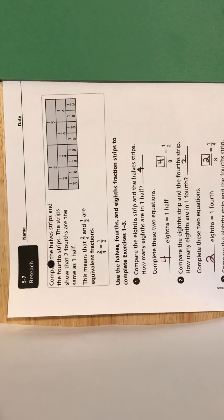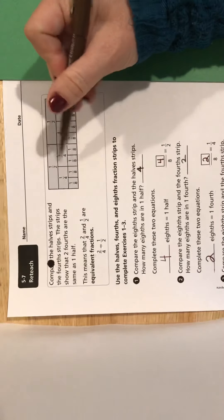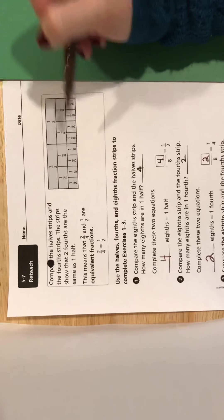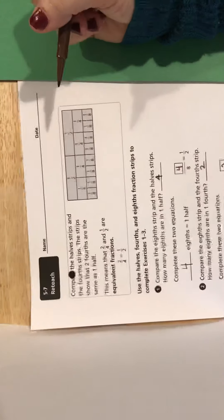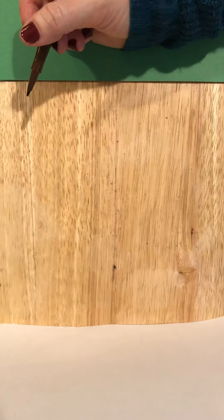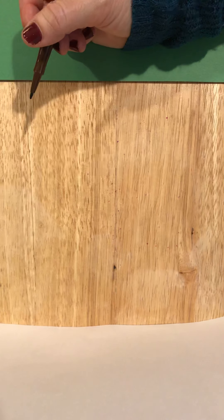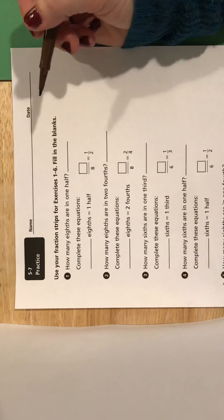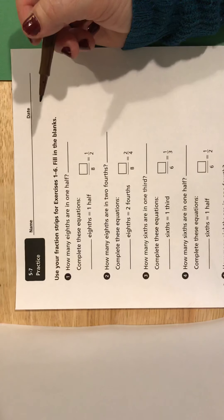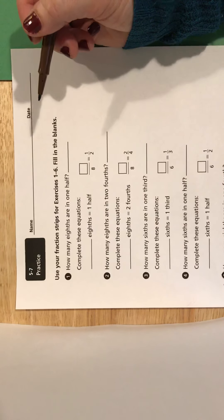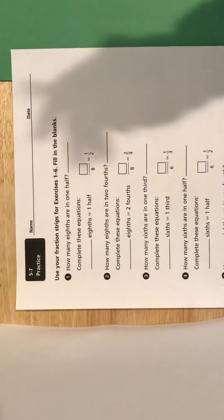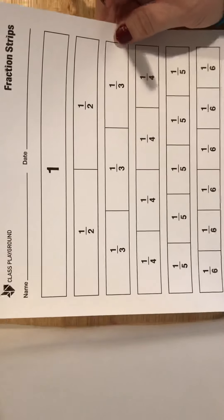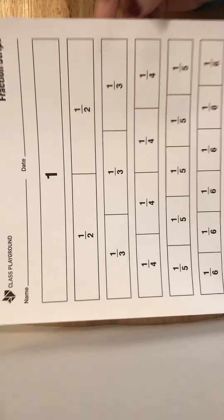So worksheet 5-7 uses this little fraction strip section here to help you answer these questions. Now, 5-8 reteach is very similar, but this time they didn't give us a fraction strip paper. So we can either use the little one, or if you've got the big one handy, we're going to be jumping back and forth and using both of these to help us find our answers.